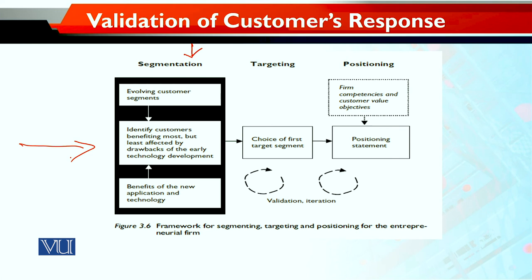When you have identified customers benefiting most but least affected by the drawbacks of early technology development — the segment we select should not only be enthusiastic about using the application, but also willing to forgo initial drawbacks. As you take them along, more segments evolve, just as we saw with the digital camera: there is an initial segment, then more segments evolve and keep growing.